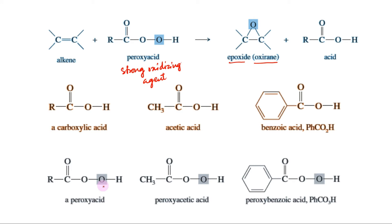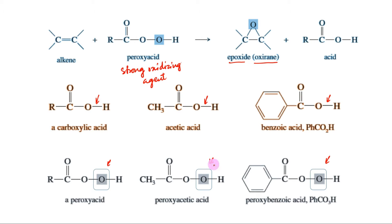Notice that a peroxyacid has the same structure as a carboxylic acid, except that an extra oxygen atom is inserted between the OH of the acid, so that the peracid has an OOH acidic linkage.